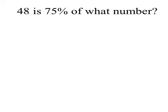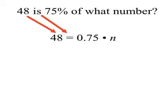Here's another question. 48 is 75% of what number? And we can translate this into an equation. 48 stays the same. The word is becomes an equal sign. 75% is converted to the decimal 0.75. The of is a times sign. And the two words, what number, become our variable n. And now we have 48 is equal to 0.75 times a number.